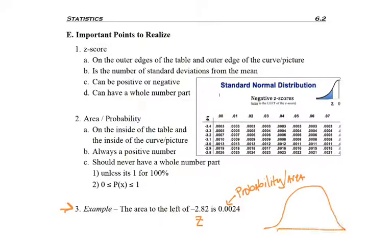I could draw this picture. Because I have a negative whole number, I know that it's over here to the left. And it tells me that this area to the left is 0.0024.